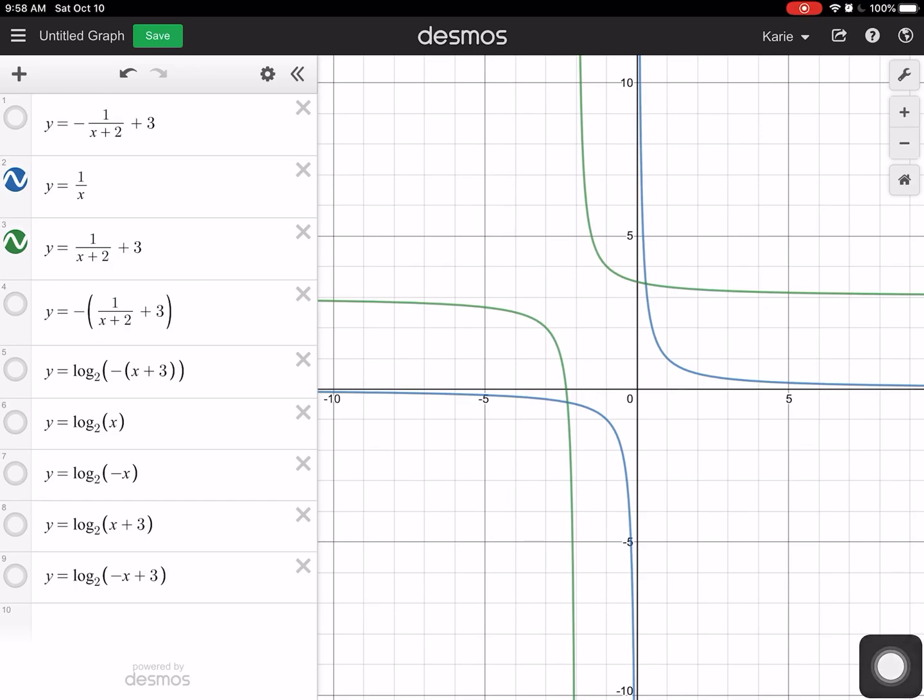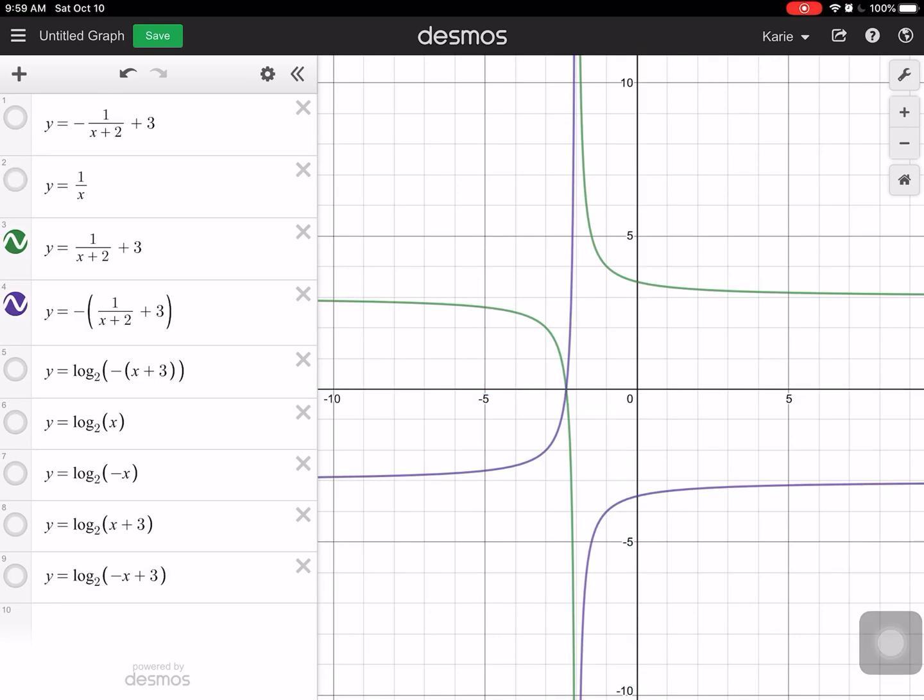then if you think about it right here, the intersection of the asymptotes would be at negative two, three. So right there if I do a reflection, then that means that this is going to have to move down here. Okay, and so that's what this graph is going to show. Let me turn off that one. So you'll notice that this one right here